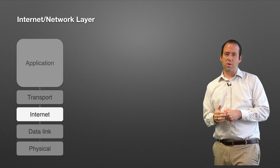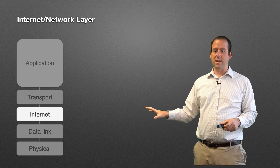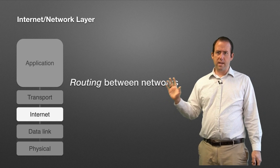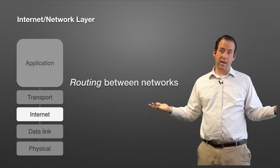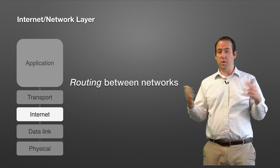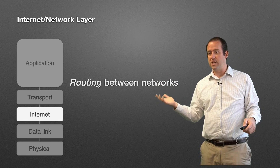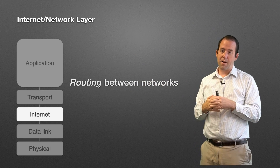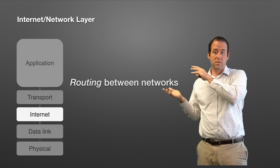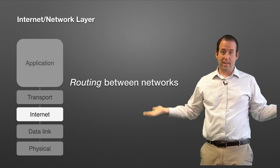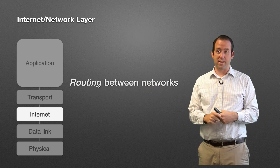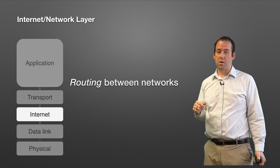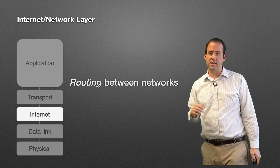Moving up to the network layer, also called the internet layer — you'll hear me use both names. The internet layer is what makes the internet work. It handles inter-network communication: sending and routing data between different networks. That's what makes everything about the internet possible — we now have protocols that can route traffic between different networks. The job of the internet layer is to figure out how to get traffic from your computer to a computer in Taiwan, or a server in Google's data center in California.